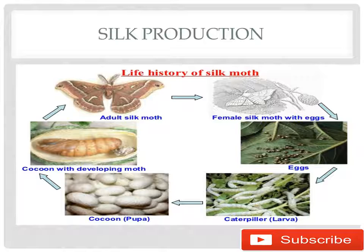Finally, the cocoon develops into a silk moth. The most common silk moth is the mulberry silk moth. Tasar, Kosa, and Muga are other types of silk. The major silk-producing states in India are Tamil Nadu and Andhra Pradesh in the south, and Assam, Odisha, and Madhya Pradesh also produce silk. Thank you for watching.